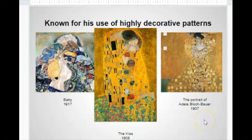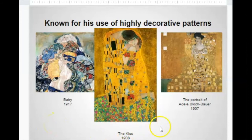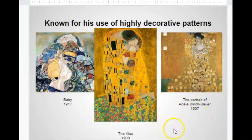He is known for his highly decorative patterns. Here's a baby up here in a little baby quilt. This is his most famous painting in the middle called The Kiss, and this is a portrait of one of his female friends. This was done in 1917, and these were done in 1908 and 1907 — that was his golden period when he would put actual gold into his paintings.